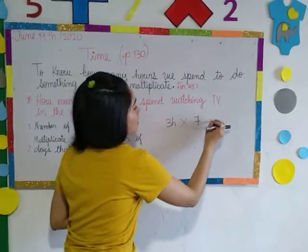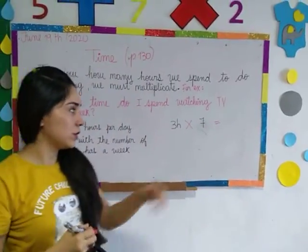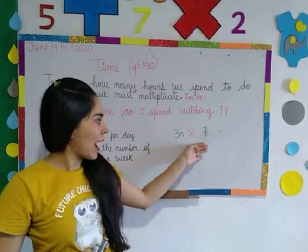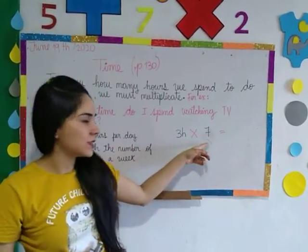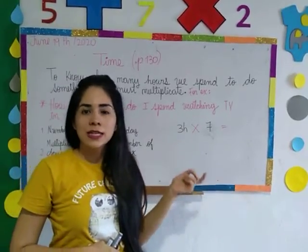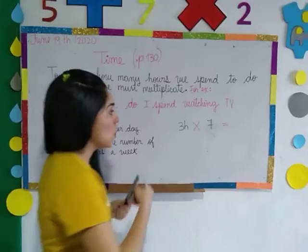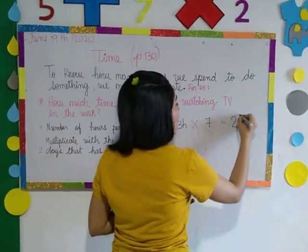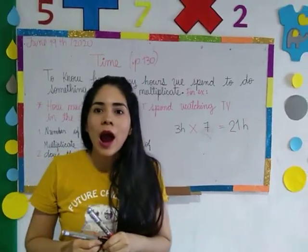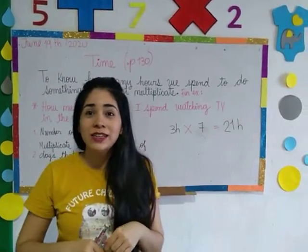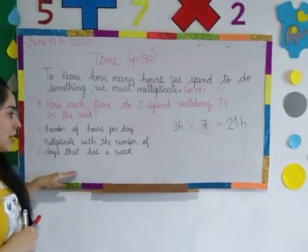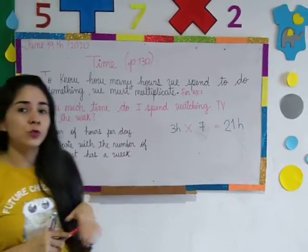If you know the answer, you can calculate without a calculator by adding: seven plus seven is fourteen, fourteen plus seven is twenty-one. So I spend twenty-one hours watching TV in the week. That is the answer. Remember that you have to multiply.